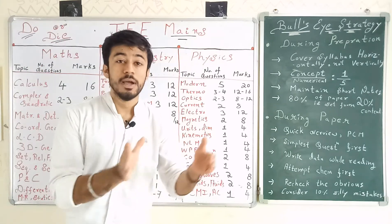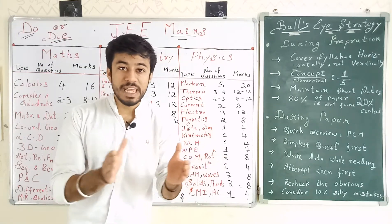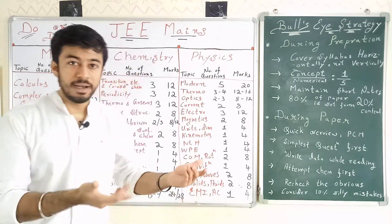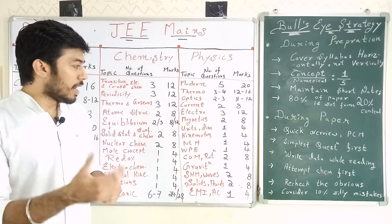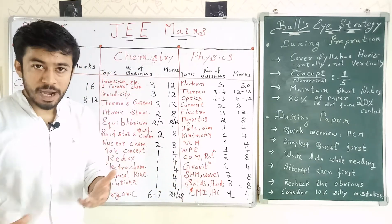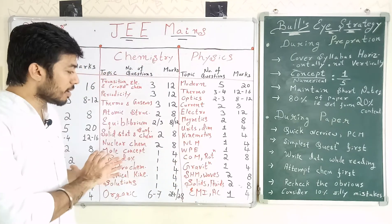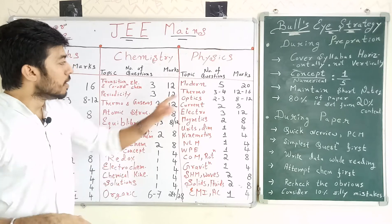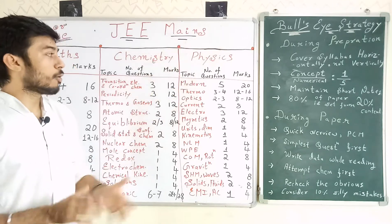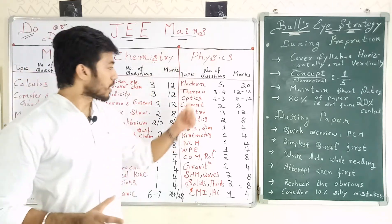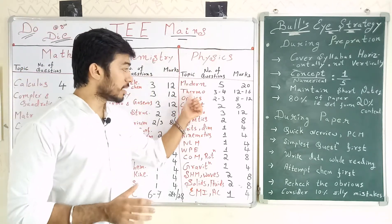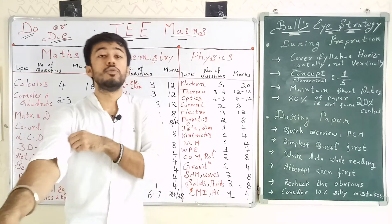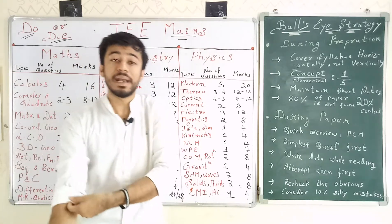For Organic Chemistry, I have written it as a whole — 6 to 7 questions, 24 to 28 marks — because every topic carries roughly equal weightage. Topics like Aldehydes, Ketones, GOC, and Hydrocarbons are all nearly equally weighted.